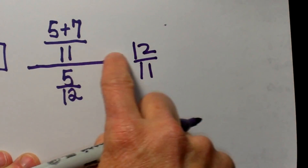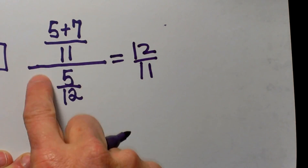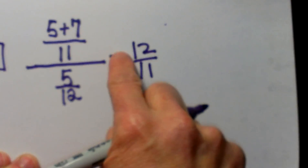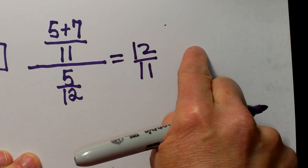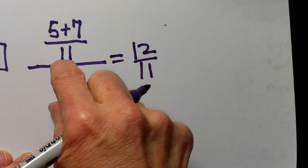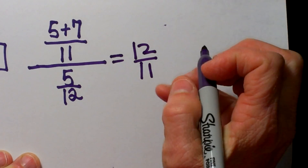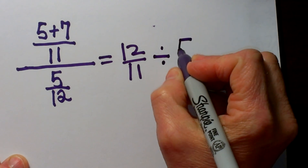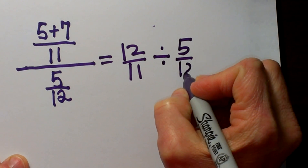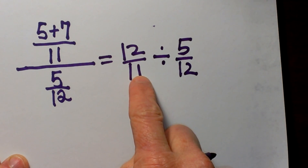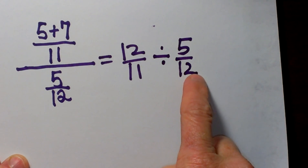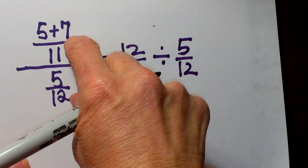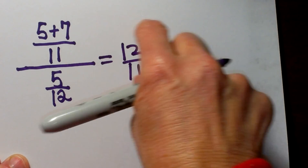Then I am going to take this bottom part of the fraction and move it, because we have a top and it is divided by the bottom. So I am going to write a division symbol over here and move this fraction over — divided by the 5 twelfths. So we have 12 over 11 divided by 5 twelfths. Now we are dividing fractions, and it is a little easier to look at written as a long expression instead of a double stack.